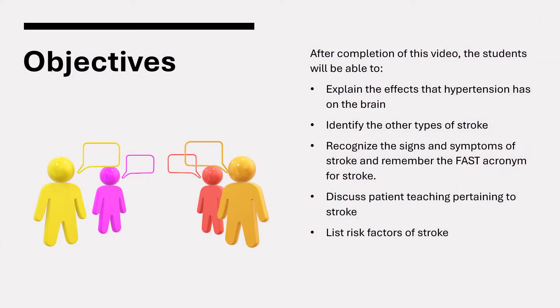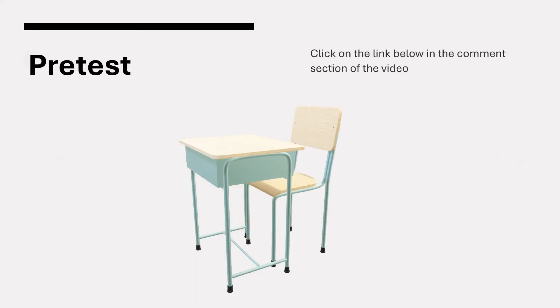After completion of this video, students will be able to explain the effects that hypertension has on the brain, identify the other types of strokes, recognize the signs and symptoms of stroke, remember the FAST acronym for stroke, discuss patient teaching pertaining to stroke, and list risk factors for stroke. You can pause the video and click on the link below in the comments section of this video.